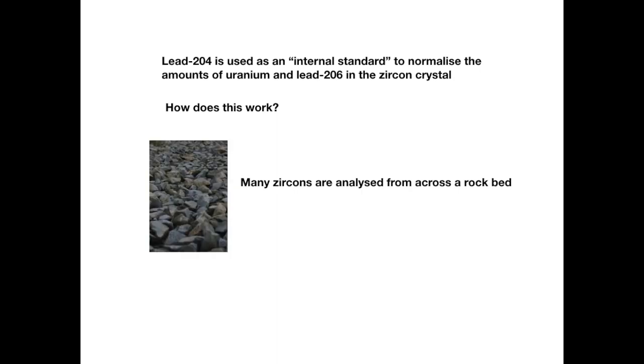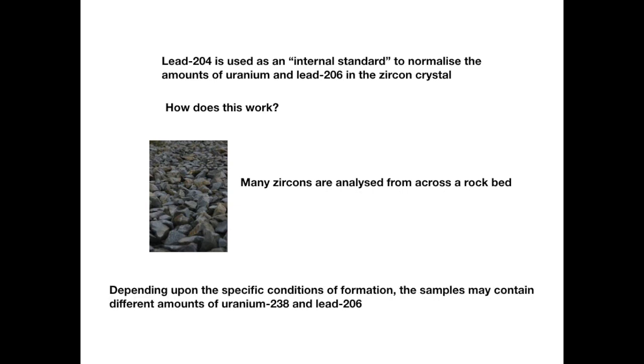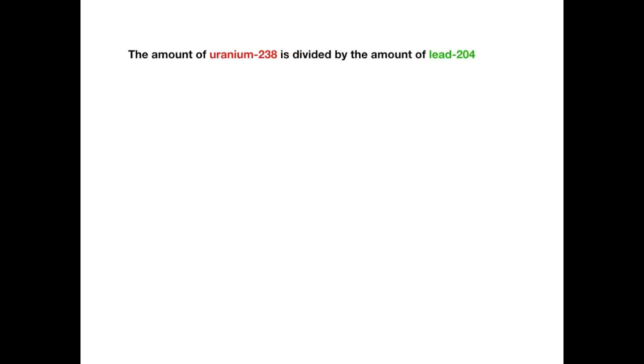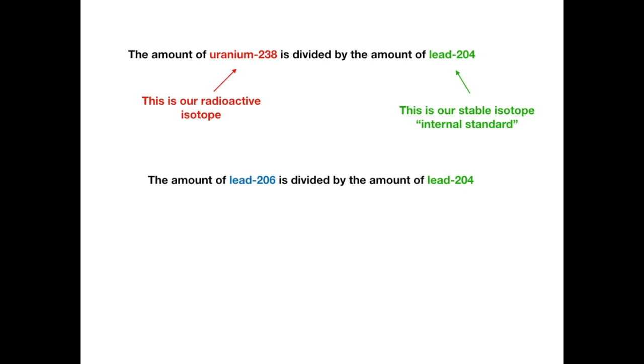If you go to a rock bed, you'll find many zircons all over the rock bed. And you take those back to the laboratory and you analyze them. And then depending upon the specific conditions of formation, the samples may contain different amounts of uranium and lead-206. The amount of uranium-238 is divided by the amount of lead-204. And I've color-coded this just to be clear. But lead-204 is our stable isotope, the internal standard, and uranium-238, of course, is our radioactive isotope. Likewise, you do the same thing with the lead-206. You take the amount of lead-206 and you divide it by the amount of lead-204. So you end up with two numbers: uranium-238 divided by lead-204, and lead-206 divided by lead-204.